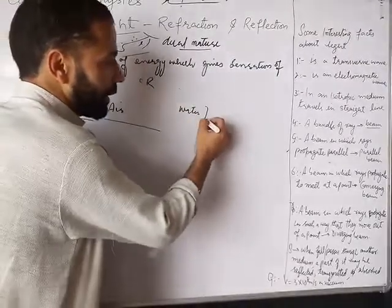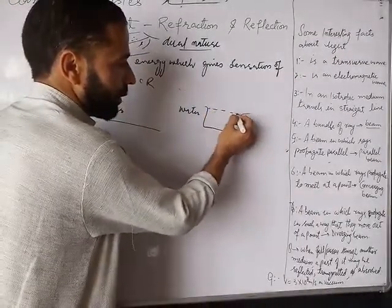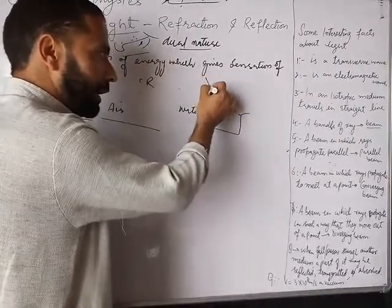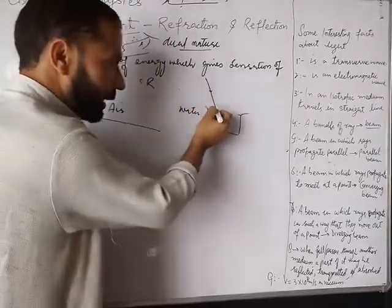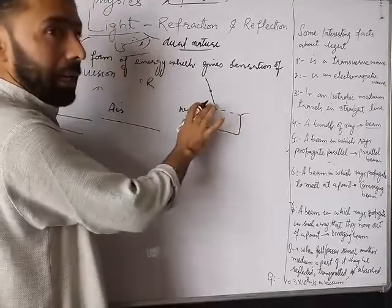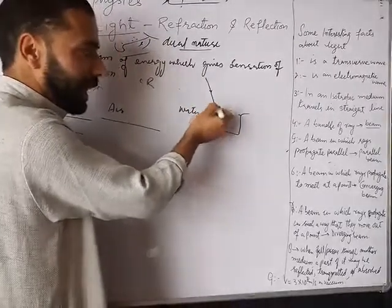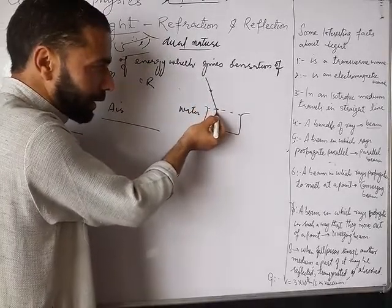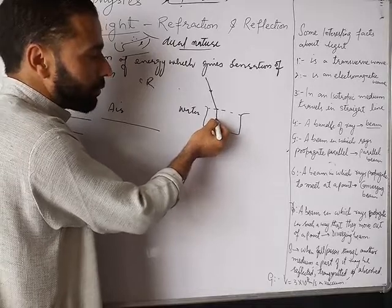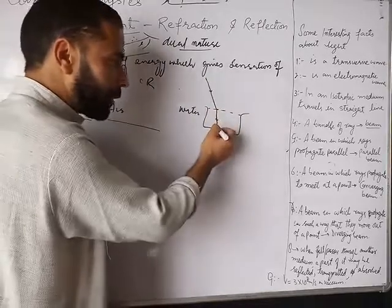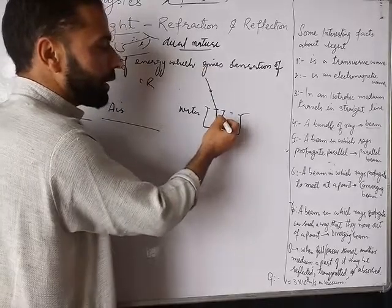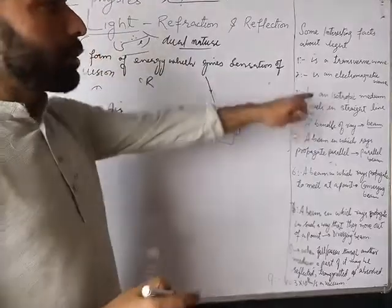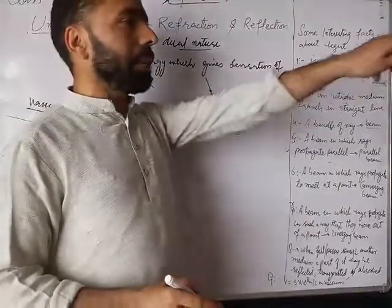If light goes from water into air, something happens at the interface — it bends. But while traveling within the water medium itself, it travels in a straight path. As long as light travels in the same medium — be it water, air, or vacuum — it travels in a straight line. This means in an isotropic medium, light always travels in a straight line. Without changing medium, light does not need to change its direction. You can do an experiment at home to verify this.